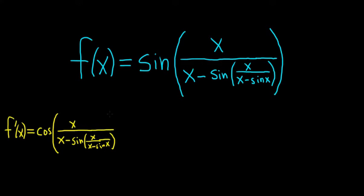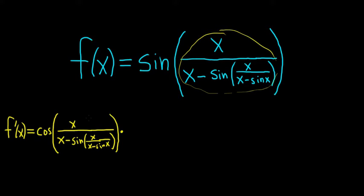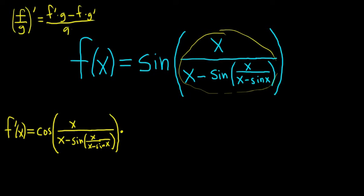We close the parentheses. The derivative of sine is cosine, so the derivative of this function will be cosine of all of this stuff, times the derivative of this inside piece. To take the derivative of this inside piece, we're going to use the quotient rule. The quotient rule says if you have f over g and you take the derivative, it's the derivative of the top times the bottom minus the top times the derivative of the bottom, all over the bottom squared.